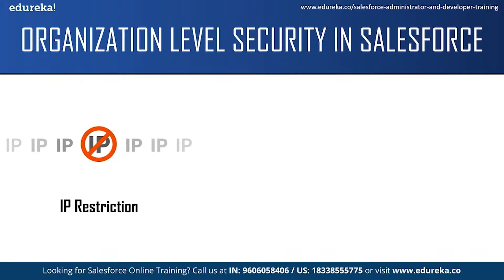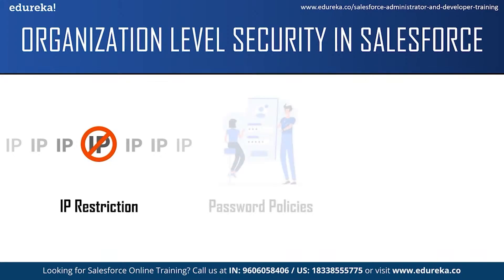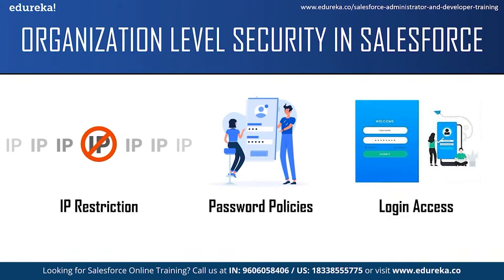You can set IP restriction on individual user profiles or even a group of profiles. For password policies, you can specify an amount of time before a user's password expires and the type of password required — for example, at least 10 to 12 characters long, containing at least one symbol, both uppercase and lowercase letters and numbers. Having a strong password makes it hard for hackers to guess. For login access, you can specify the hours from when to when users can log in. You can restrict certain users from logging in on weekends or limit night shift employees to only their shift hours.